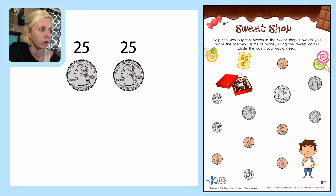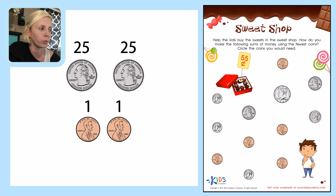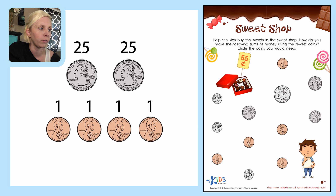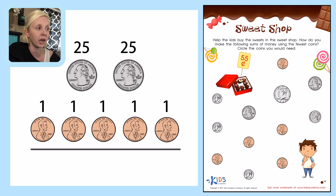So I'm going to use five pennies — one, two, three, four, five — and put a one on them to represent a penny or one cent. So I have five pennies and two quarters, and that equals 55 cents.